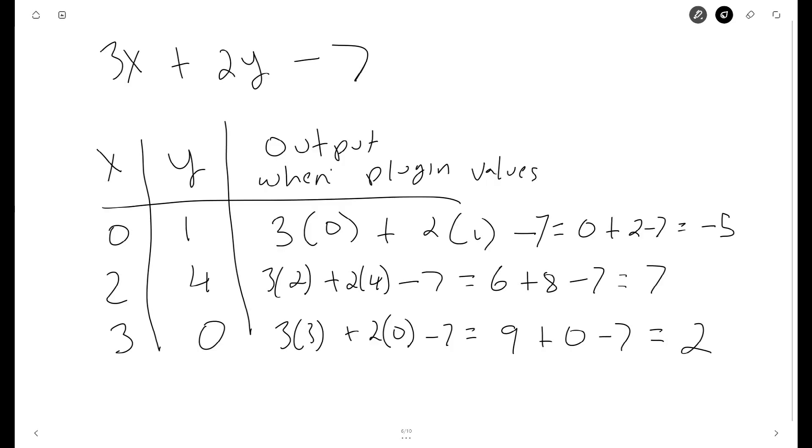The following example that I created is 3 times x plus 2 times y minus 7. I created a table that has two variables, the x and the y column. We have the values 0, 1, 2, 4, 3, 0, and then the output of this expression when we plug in the x and y values correspondingly are in the third column.